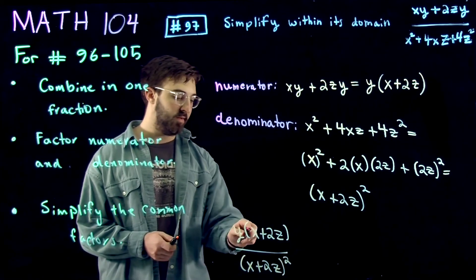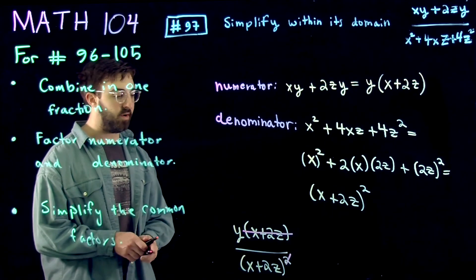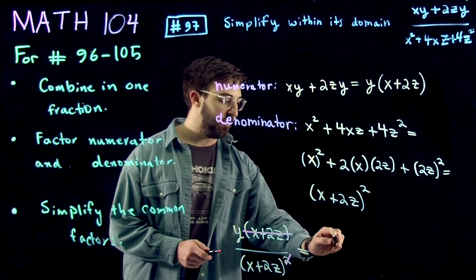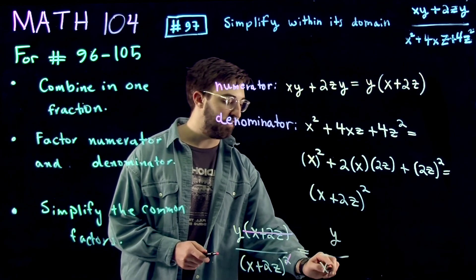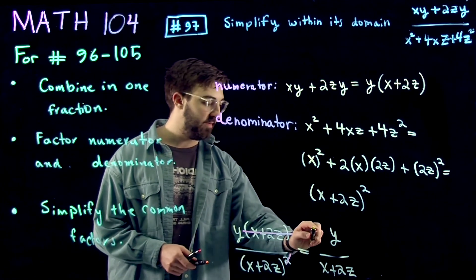And you can cancel one factor of x plus 2z from the numerator and the denominator. What you wind up with is y divided by x plus 2z. This is your final answer.